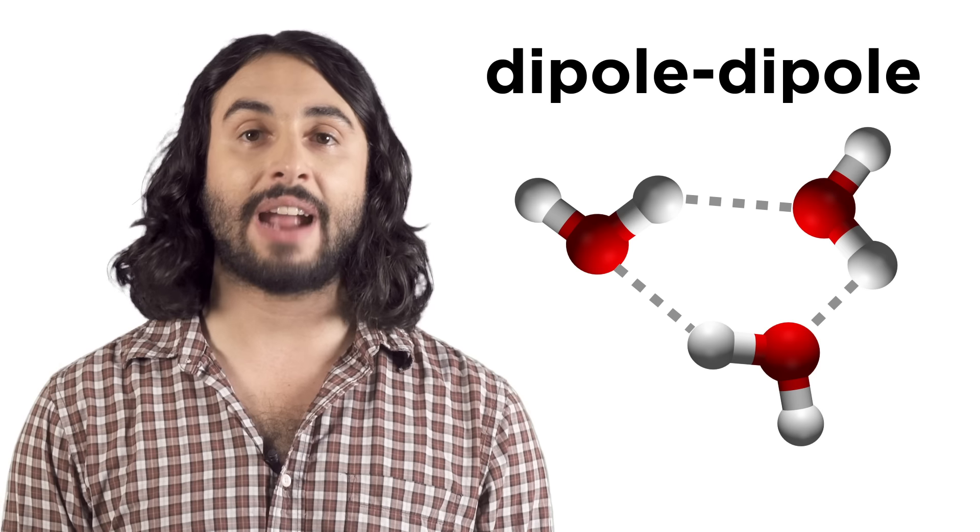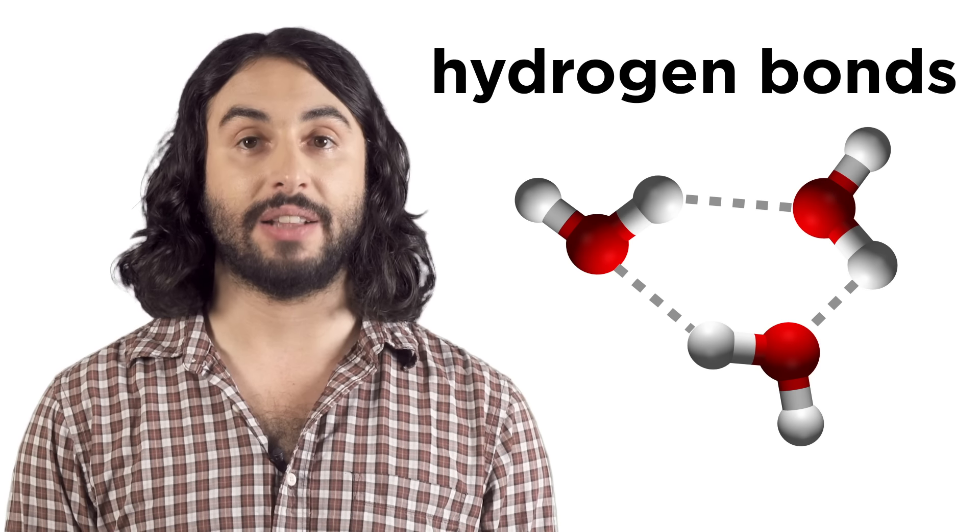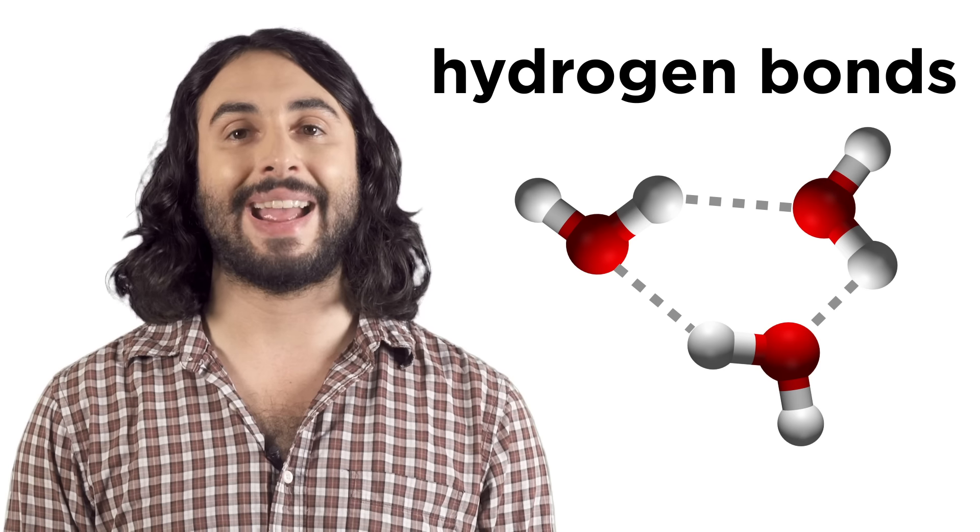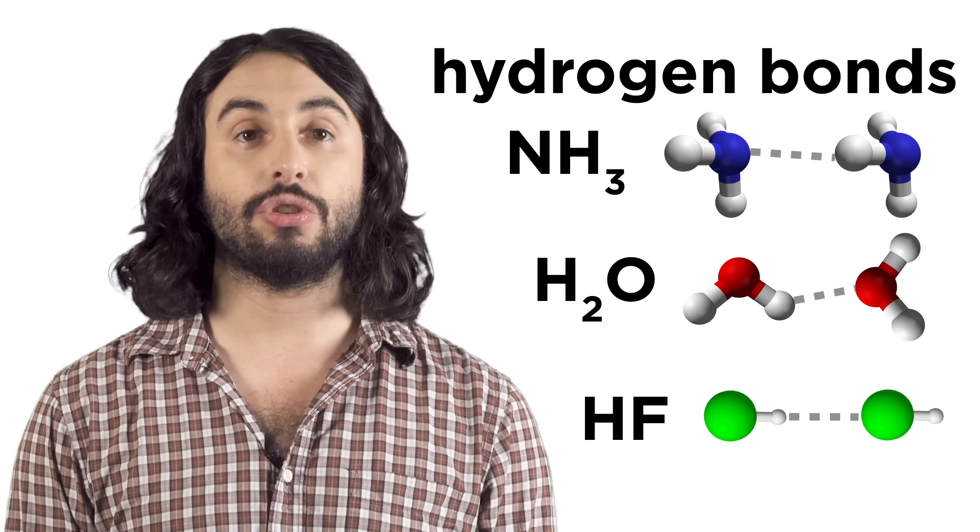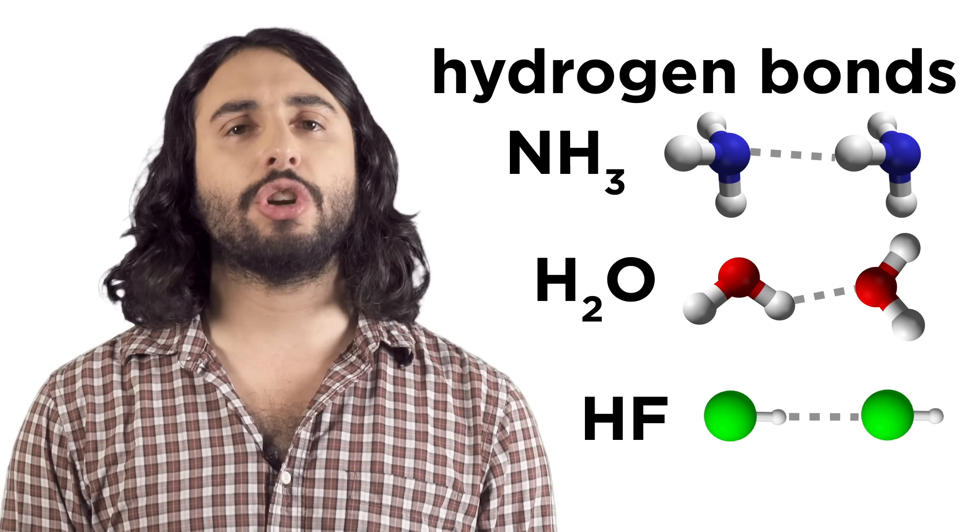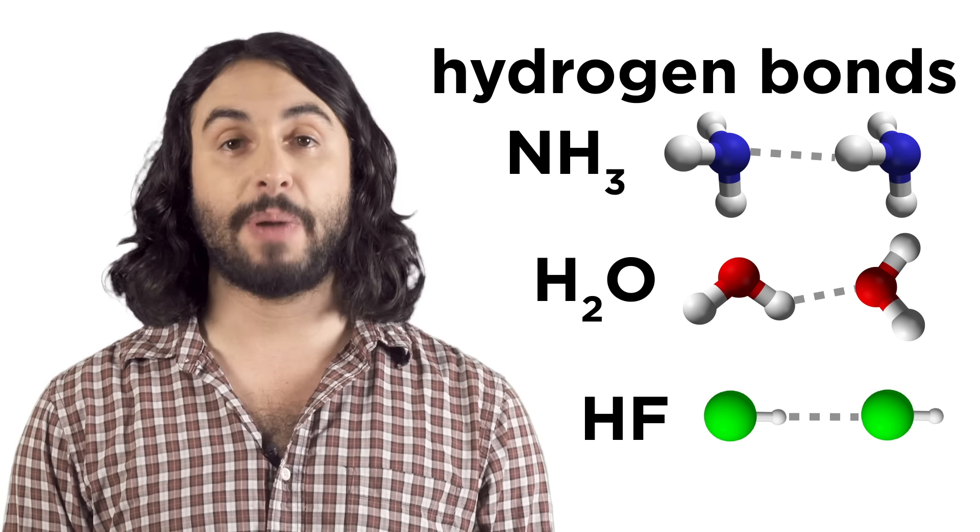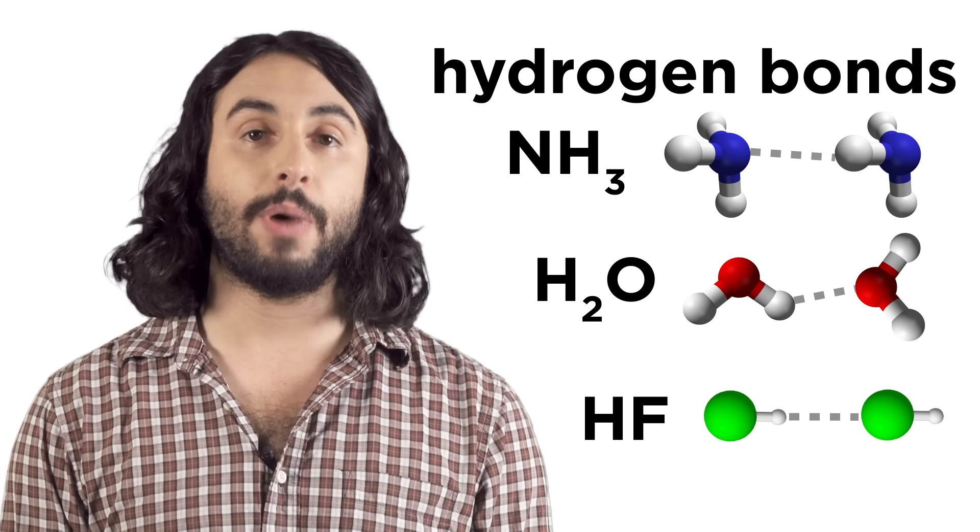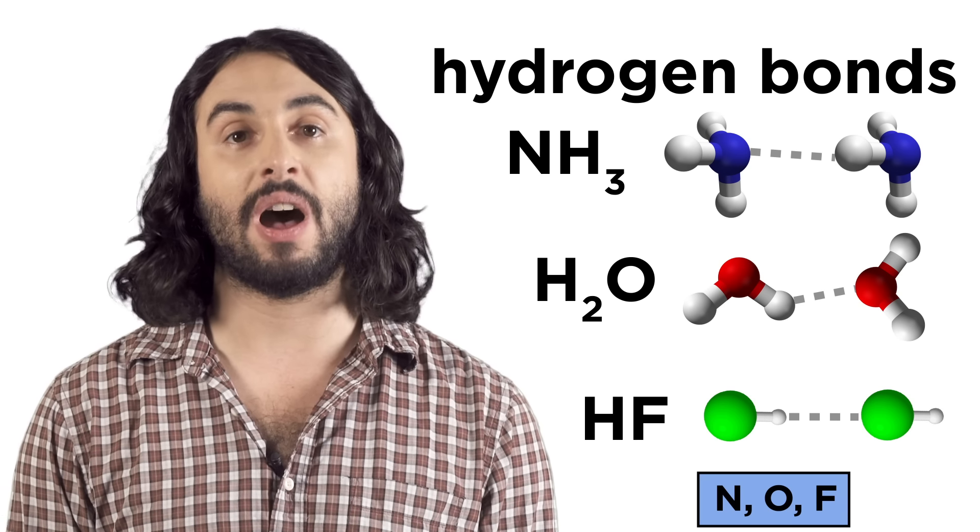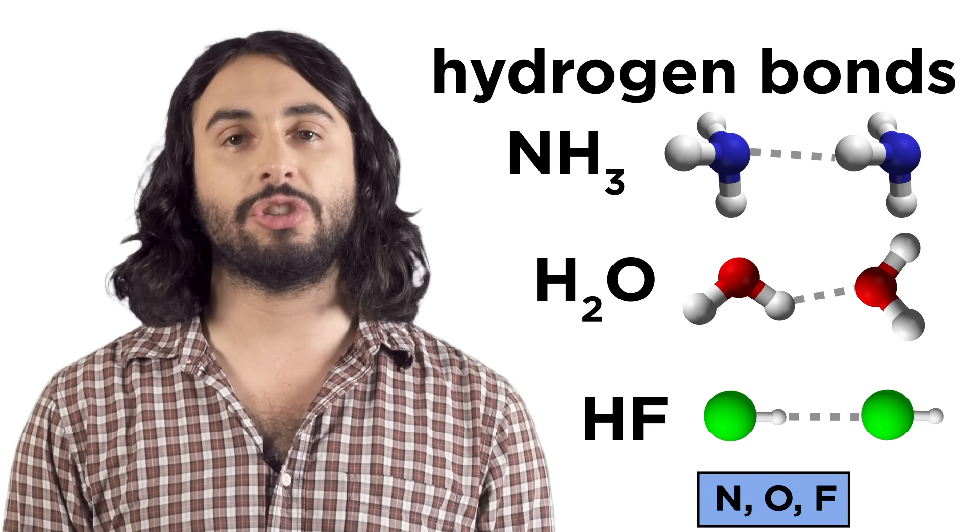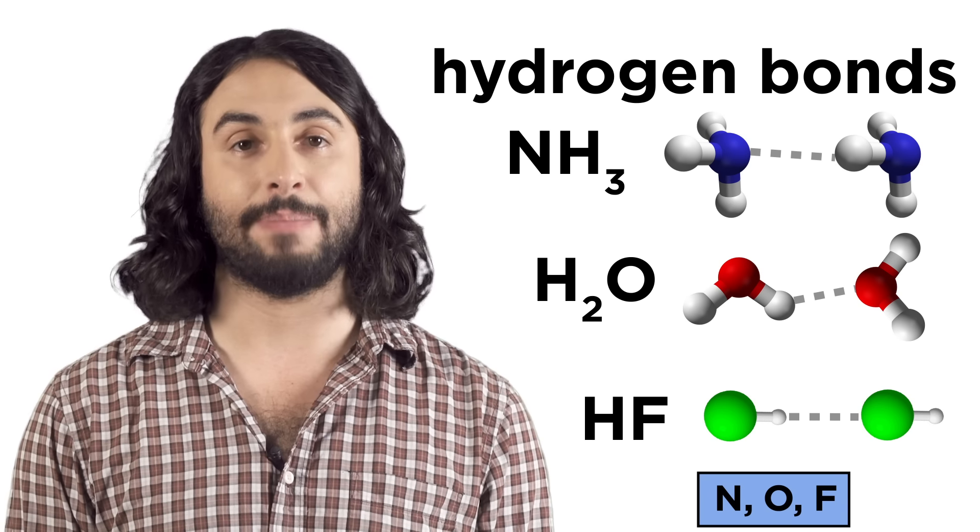In this case, these dipole-dipole interactions qualify for a special title: hydrogen bonds. This is when dipoles generated by NH, OH, or FH bonds interact with each other. These are just especially strong dipole-dipole interactions. They are especially strong because these are the most electronegative elements, so they will create the most strongly polarized bonds, resulting in a very strong dipole and therefore very strong dipole-dipole interactions.